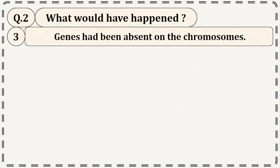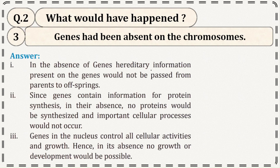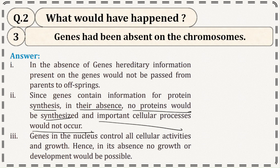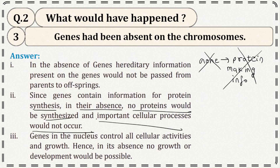What if genes had been absent on chromosomes? In the absence of genes, hereditary information present on genes would not be passed from parents to offspring. Since genes contain information for protein synthesis, no protein would have been synthesized and important cellular processes would not have occurred. Genes control all cellular activities and growth, so in their absence no growth and development would have been possible.